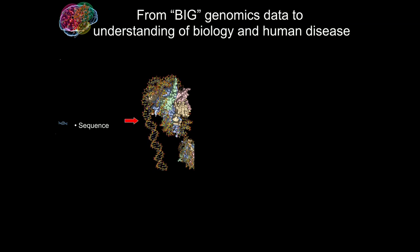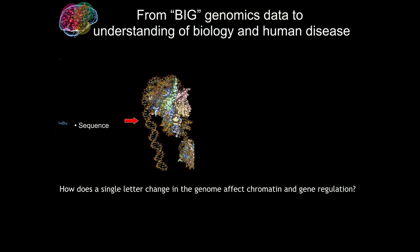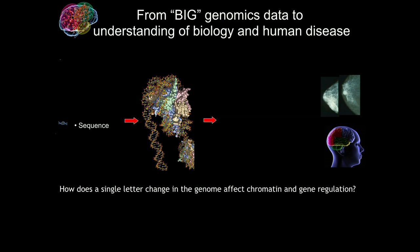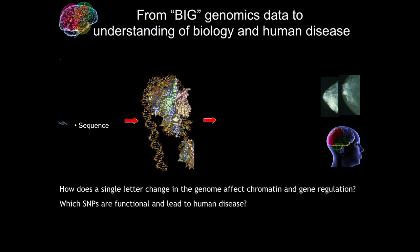First, we need to understand how we go from a single nucleotide polymorphism in the genome to specific regulatory changes in the chromatin, as well as which proteins are going to be expressed. In other words, how does a single letter change in the genome affect chromatin and gene regulation? And then, which SNPs are actually functional and lead to complex human disease?